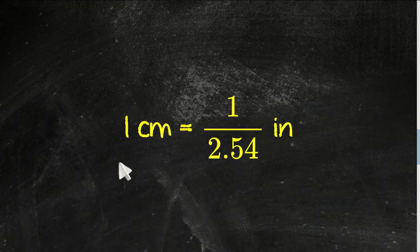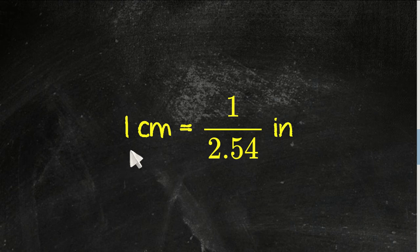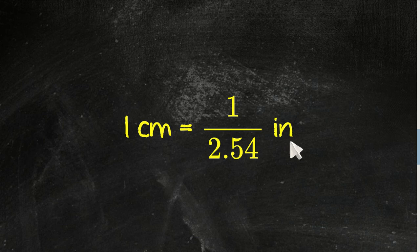This is the formula we'll use to answer the question: 1 centimeter equals 1 divided by 2.54 inches.